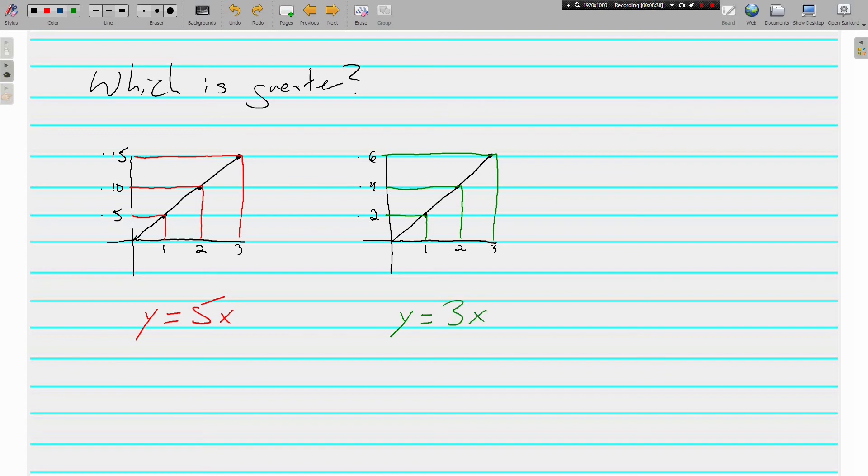So we know that the one on the left is greater because 5 is more than 3 and also because our y intervals are greater than the ones on the right and both our x intervals are the same. So that's how you can compare two graphs.